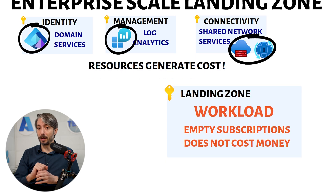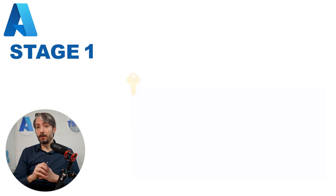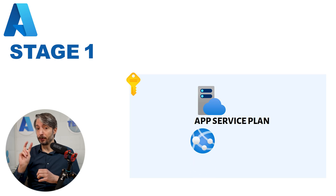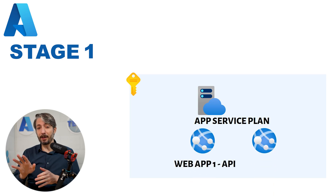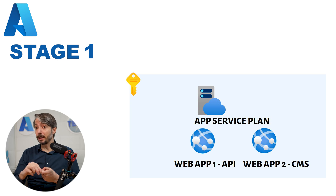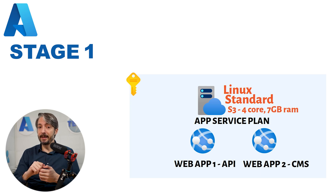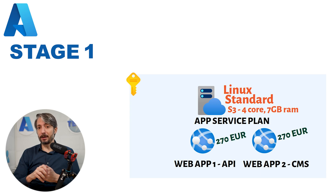Let's start with stage 1. The application will be web-based, where we have decided to go for the app service plan with two web apps. We're not going to go overboard, and both web apps will be configured as Linux S operating system, standard tier, and an S3 instance which has 4 cores and 7 GB of RAM. Each instance is about 270 euros a month, which in total for both of them amounts to 540 euros.